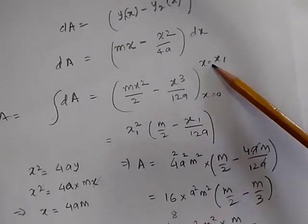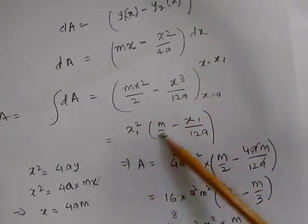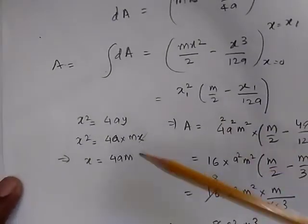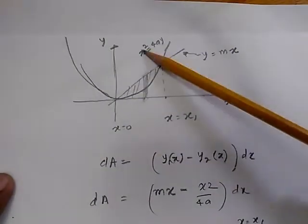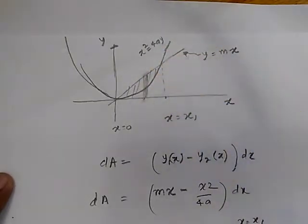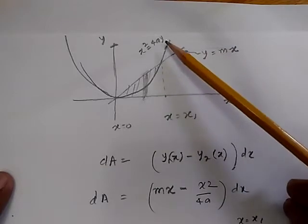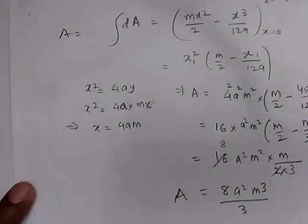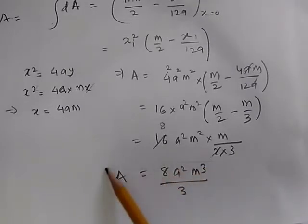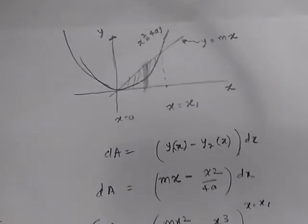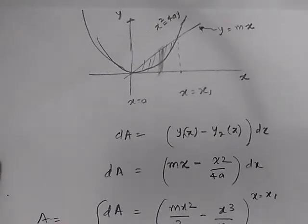The intersection point is at x equal to x1. We find it by solving x squared equal to 4ay and y equal to mx simultaneously. Substituting y equal to mx gives x equal to 4am. Substituting this value of x1 gives us the area in terms of a and m. This is an example of how to solve a general problem of area between a parabola and a straight line. The same approach works for area between two parabolas, a parabola and a circle, or any other general curve.